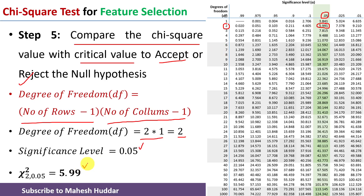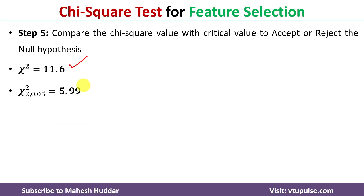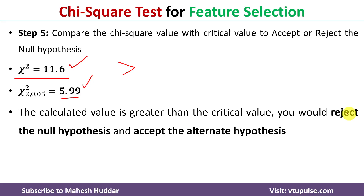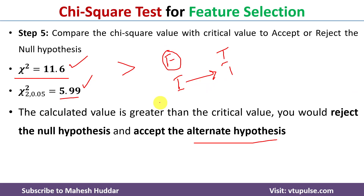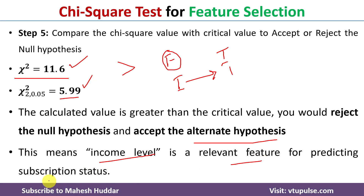We have calculated the chi-square value of 11.6 and the critical value of 5.99. Since the calculated chi-square value (11.6) is greater than the critical value (5.99), the null hypothesis is rejected and the alternate hypothesis is accepted. Rejecting the null hypothesis means the given feature — income — is relevant to the target. So the income level is a relevant feature for predicting the subscription status. The same process has to be repeated for all features in the dataset to determine which are relevant.